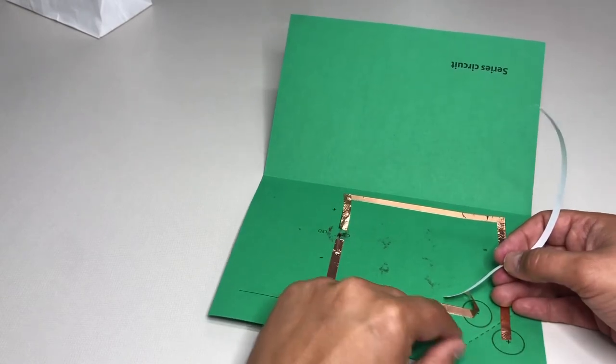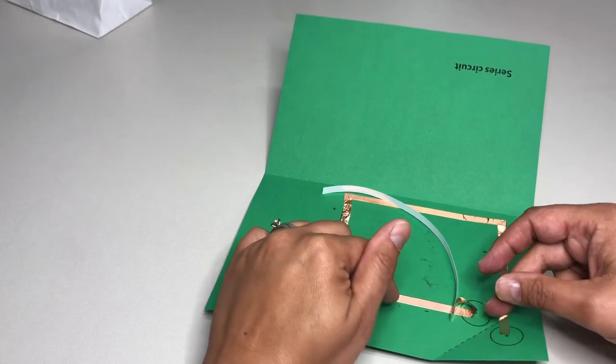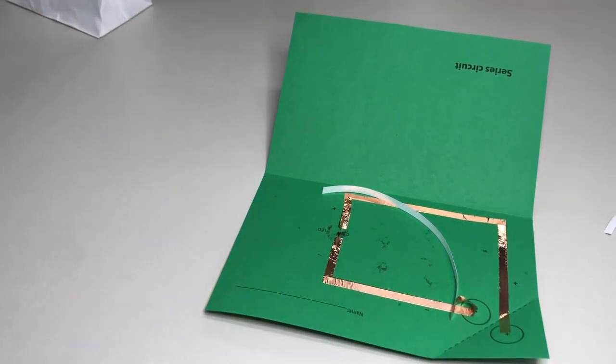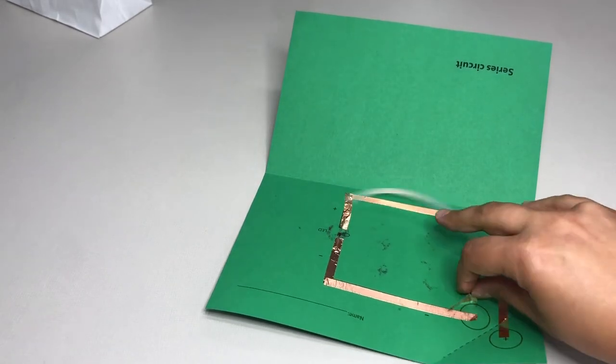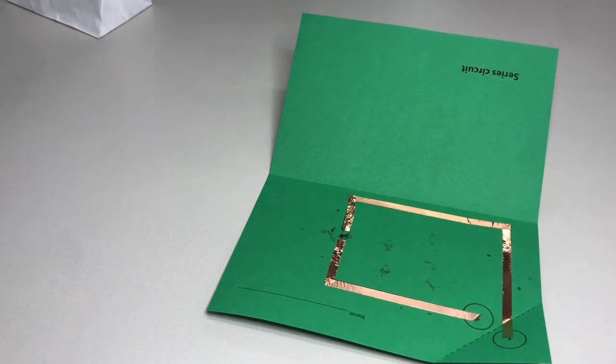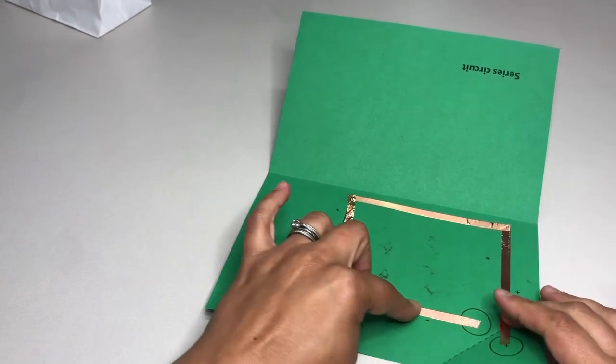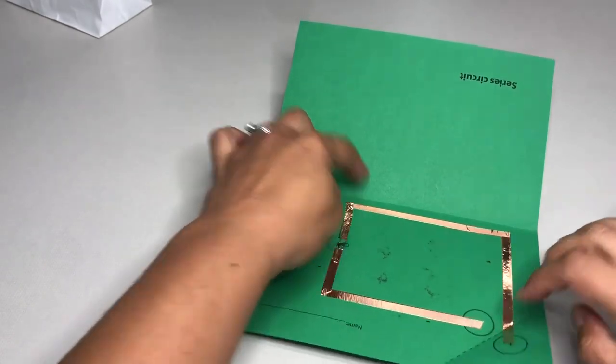The circle here is where my battery is going to go. I don't want to connect my copper tape and I want to end it about there. I'm going to get my scissors to cut that. I make sure that is down. I'm just going to press along my copper tape again to make sure it's sticking.